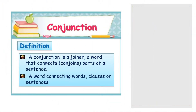Conjunction can be defined as a joiner — a word that connects or conjoins parts of a sentence. You can also say it is a word that connects words, clauses, or sentences. It is very useful when you have many ideas and you want to put them in one sentence or in phrases.